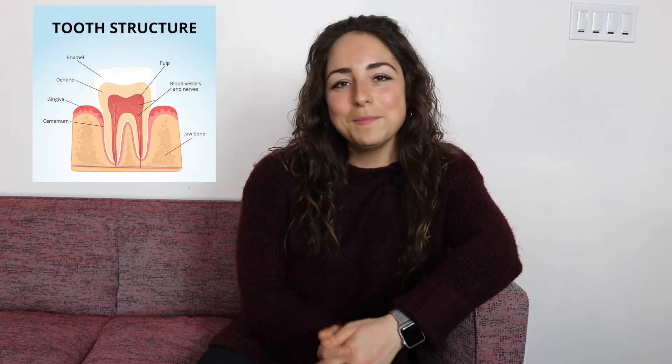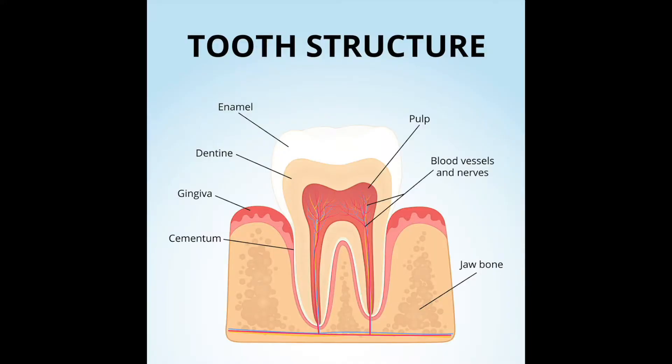A tooth is like a building — it has a frame and then it has materials that fill the frame. The frame of the tooth is made of organic proteins like collagen and others like enamelin. The filler part of the crystal is called apatite, made of calcium and phosphate. Different combinations of these proteins and crystals give us enamel and dentin.